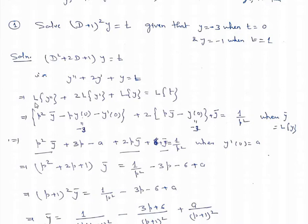Now take Laplace transform on both sides. We have L{y''} + 2·L{y'} + L{y} = L{t}. Applying the formula: L{y''} = p²·ȳ - p·y(0) - y'(0), plus 2 times L{y'} = p·ȳ - y(0), then plus L{y} = ȳ. The Laplace transform of t is 1/p², where ȳ = L{y}.